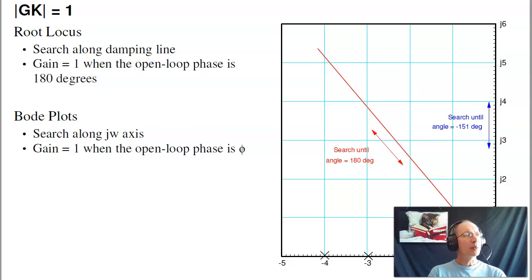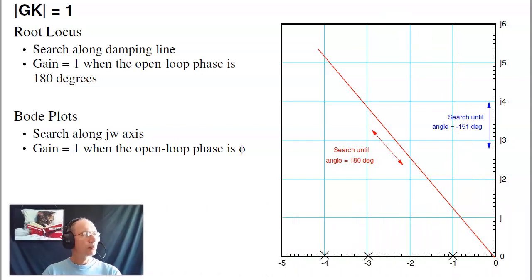It's similar to what we did in the root-locus plots. In root-locus, what you do is you search along a damping line until the angles add up to 180 degrees. Once I find that spot, at any point on the root-locus, g times k is minus 1. For meeting specifications, if I want a very specific response, like when I place the closing poles here,